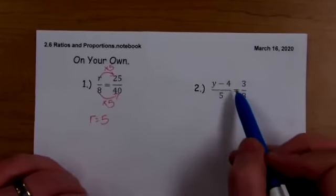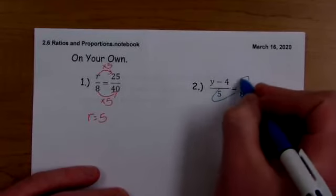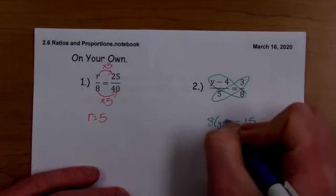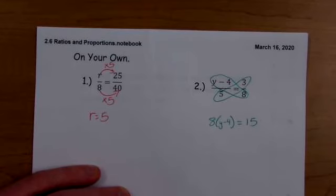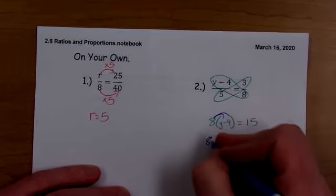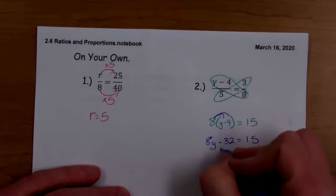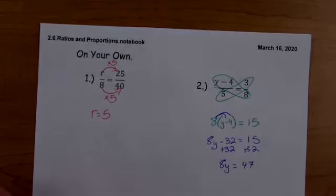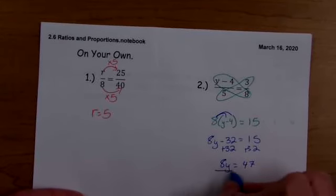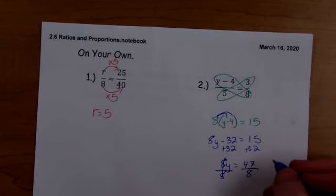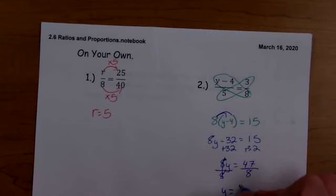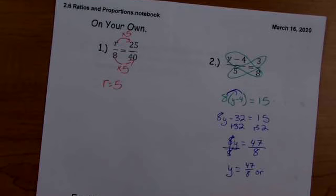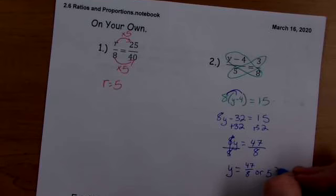I'm going to do another example with a variable in the distributive here, just so that we can see it. Do our cross products. Three times five is 15. Eight times y minus four would be eight times y minus four. We got to distribute. Eight y minus 32 equals 15. We're going to add 32. Add 32. Eight y equals 47. Divide by eight. Divide by eight. Y equals 47 eighths, because we can't simplify that. Or we can turn this into five and seven eighths.